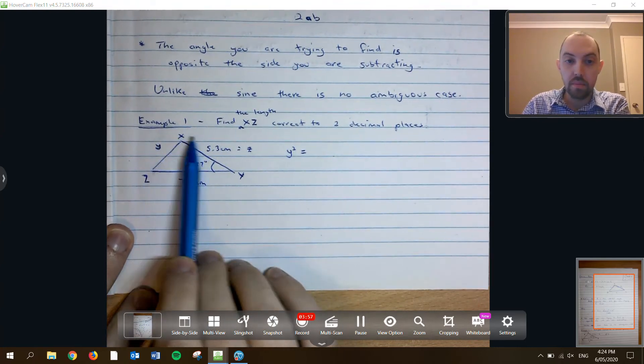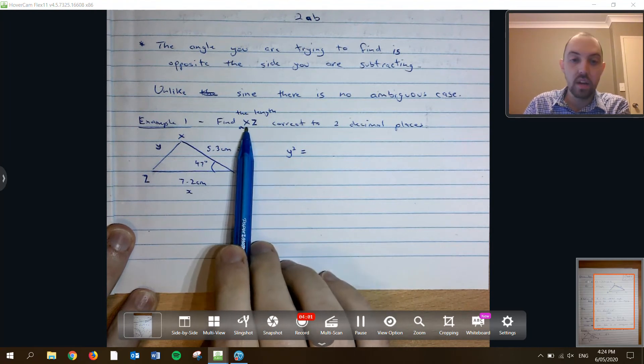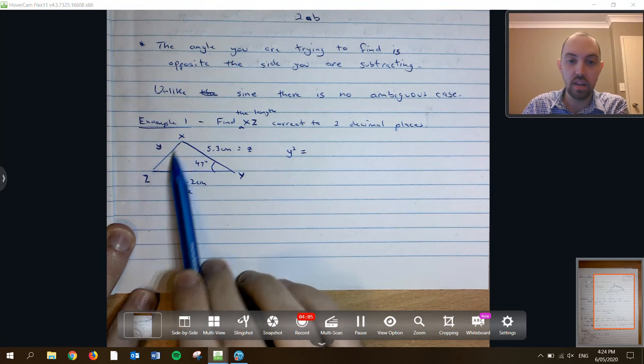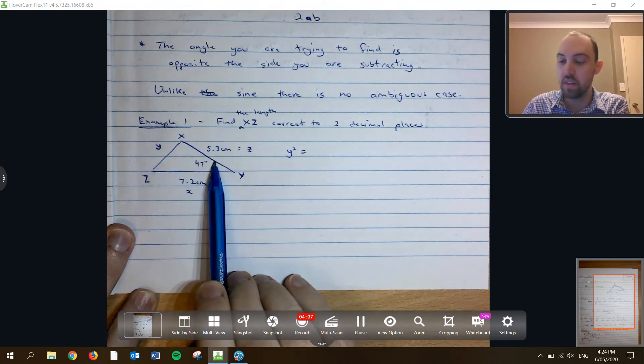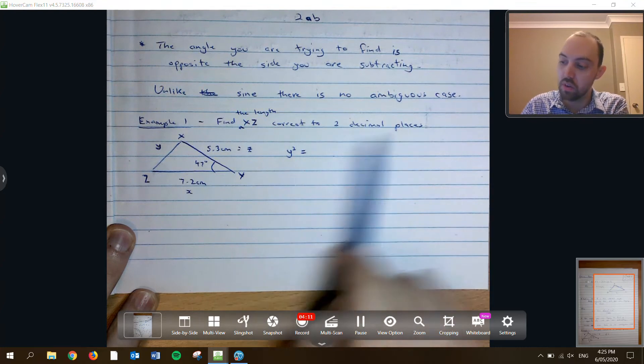Anyways, let's get into some examples here. So, for our first example, find the length, which I've had to add in afterwards, XZ, which is this side here, opposite the angle that I've got written in here, 47 degrees, correct to two decimal places.